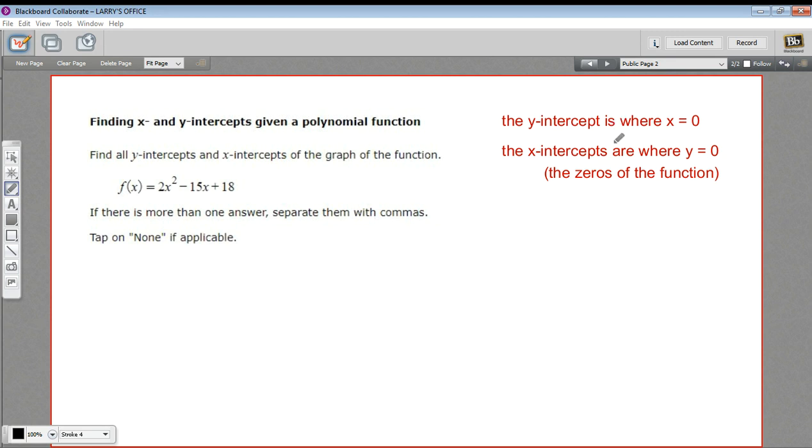And the y-intercept is where x equals 0. So to find the y-intercept, we just put in 0 for x. And this makes this function pretty easy. 2 times 0 minus 15 times 0 plus 18 is just going to be 18. So the y-intercept is 18.